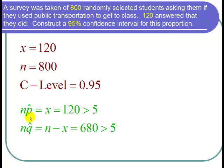So np̂, that's actually just the number of successes and 120 answered yes. So 120 is definitely bigger than 5. And nq̂ is the number of failures, that's just 800 minus 120 or n minus x and that's 680 which is also bigger than 5. So I can use a normal distribution in these calculations.